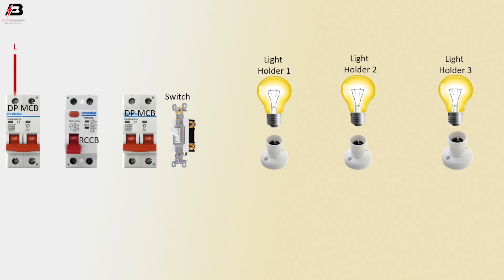Phase connection to double pole MCB circuit breaker. Phase connection outgoing from double pole MCB to connect RCCB input. Phase connection outgoing from RCCB to connect double pole MCB input.